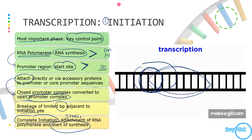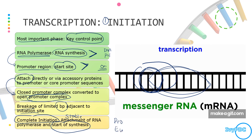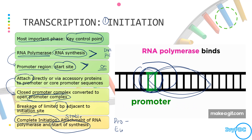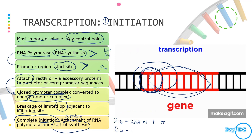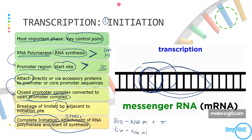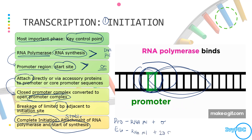There are differences in transcription between prokaryotes and eukaryotes. In prokaryotes, the small subunit and large subunit of RNA polymerase along with sigma factors are needed to attach to the start site. But in eukaryotes, the RNA polymerase together with around 20 additional factors are required to properly start the initiation complex.